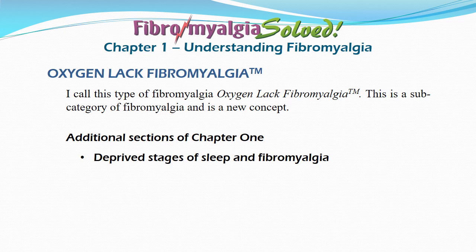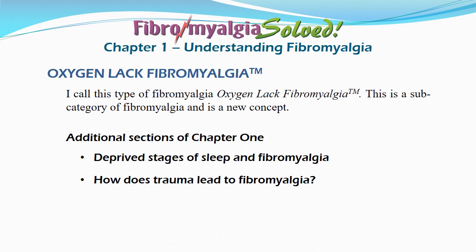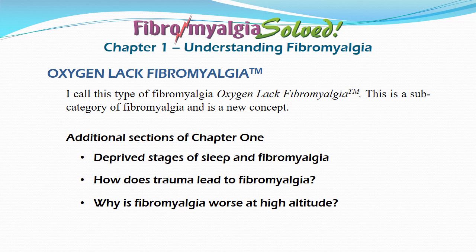There is a section on deprived stages of sleep and fibromyalgia. There is also a section on how trauma leads to fibromyalgia — a really interesting section. Many people state their fibromyalgia started with trauma. The section explains how they previously had sleep apnea but were not yet experiencing muscle spasms from it, because not everyone with sleep apnea has spasms. But their muscles are primed for spasm by the apnea. They get into an accident, their muscles go into spasm as anybody's would, but their sleep-apnea-primed muscles then stay in spasm. There is also a section on why fibromyalgia is worse at high altitude, and a video animation on sleep apnea at the end of the chapter.